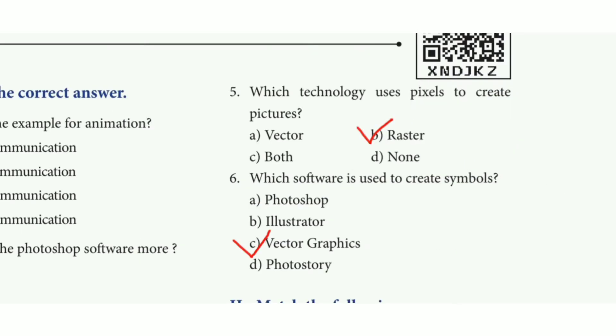Fifth one: which technology uses pixels to create pictures? The answer is option B, raster.